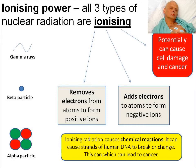Gamma rays, beta particles and alpha particles are all ionising. This means they can either remove electrons from atoms to form positive ions, or add electrons to atoms to form negative ions. As a result, they can potentially cause cell damage and cancer, because they cause chemical reactions and can cause strands of DNA to break or change, which can lead to cancer.